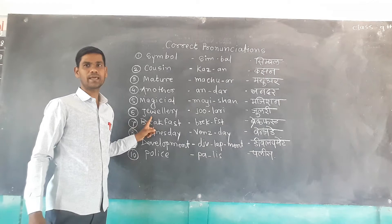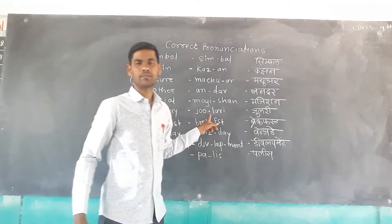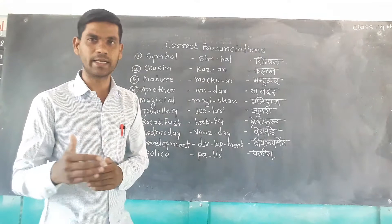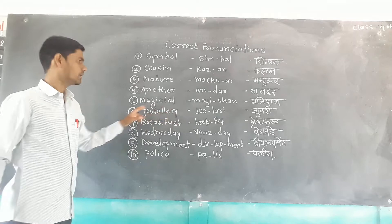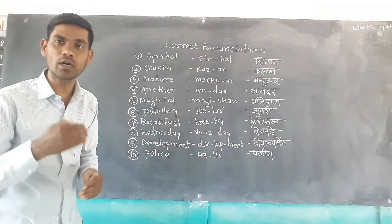Number six — 'jewelry.' This is again an incorrect pronunciation. The correct pronunciation is 'jewelry,' spelled J-E-W-E-L-L-E-R-Y. Not 'jewelry' — it is 'jewelry.' This is the correct pronunciation of the word.